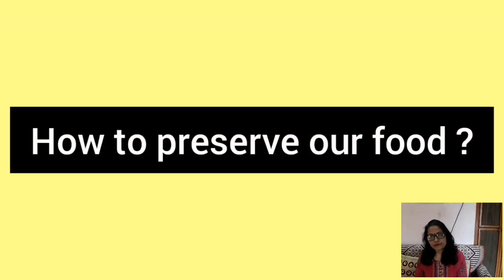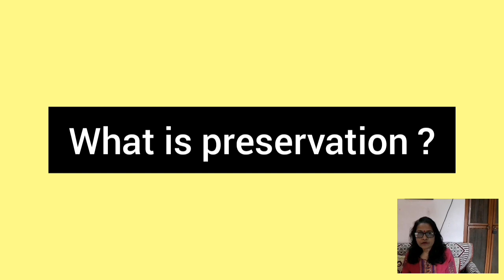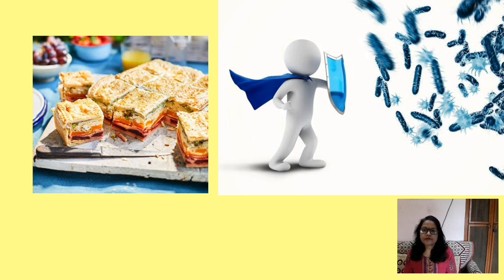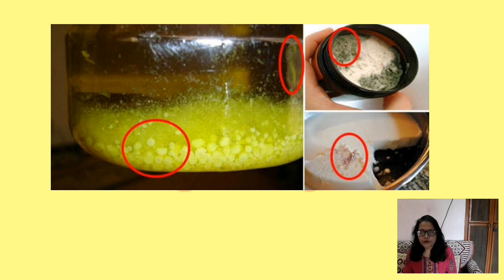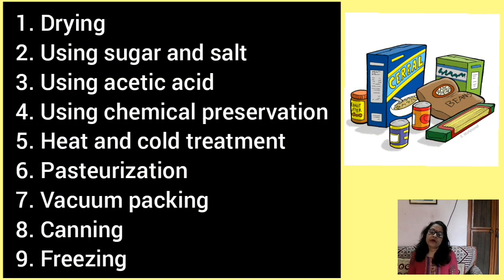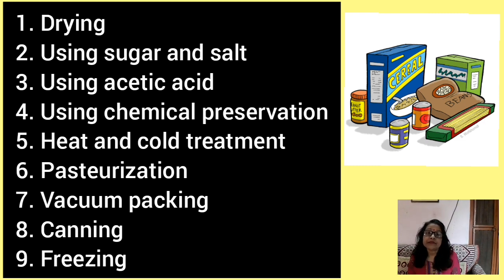Food preservation is a process of treating and handling food to stop or greatly slow down spoilage caused by microorganisms. Some methods of food preservation include: drying, using sugar and salt, using acetic acid, using chemical preservatives, heat and cold treatments, pasteurization, vacuum packing, canning, and freezing.